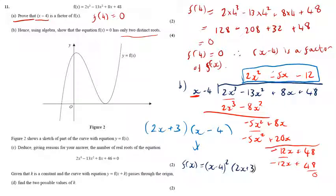And so this is why it's only got two distinct roots, because one of its roots is when x equals 4, and the other root is when x equals minus 3 over 2. OK, and so we've done all the work there to show that it's only got two distinct roots.